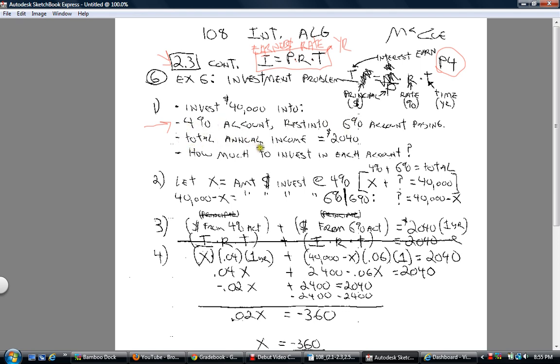They're going to put X amount of money into the 4% and the rest of it's going in there. So keep that in mind. Now, the total amount of annual income was earned was $2,040. That is the I, the grand total I. So keep that in mind. How much to invest in each account?